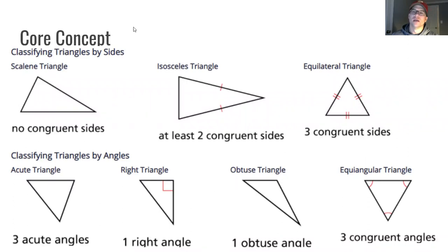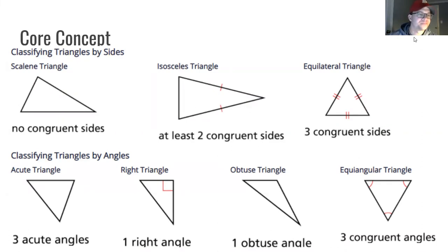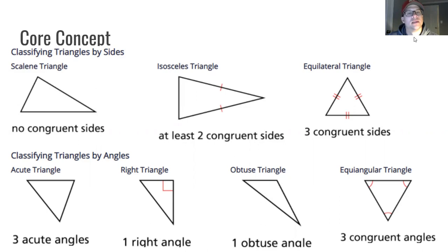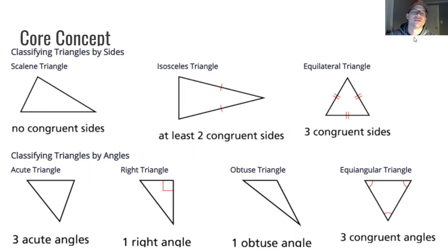A major core concept is looking at different types of triangles depending on the relationship of their sides and angles. Looking at the sides first: if a triangle has no sides congruent to each other, it is called scalene. If there are two sides congruent to each other, those are isosceles triangles — think about isolating the one side that is by itself. And then three congruent sides is equilateral; 'eq' means equal and 'lateral' means sides.